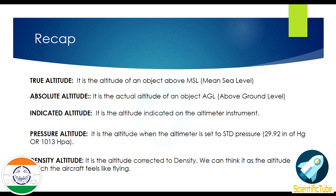Let's recap what we learned. True altitude: altitude of an object above mean sea level. Absolute altitude: actual altitude of an object above ground level. Indicated altitude: altitude indicated on the altimeter instrument. Pressure altitude: altitude when the altimeter is set to standard pressure — 29.92 inches of mercury or 1013 hectopascals. Density altitude: altitude corrected for density, or the altitude at which the aircraft feels like it's flying.